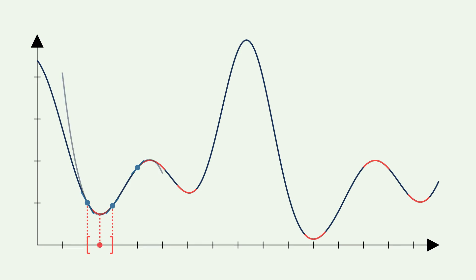After the first iteration, the algorithm has at least three points available and therefore uses a cubic interpolation to find the next point. For demonstration, let us try the zoom step on another interval that fulfills the requirements. Feel free to pause before each algorithm step and try to predict what the next step of the algorithm will be.